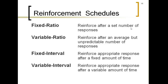Fixed ratio gives the person some control over when they get the reward. If I tell my son he can have candy after three math problems, he decides whether to drag it out or work hard. It's about how many behaviors you do, not how long it takes. A coach saying 'run two more laps and you get a water break' is another fixed ratio example — you know how many responses to complete before getting the reward.